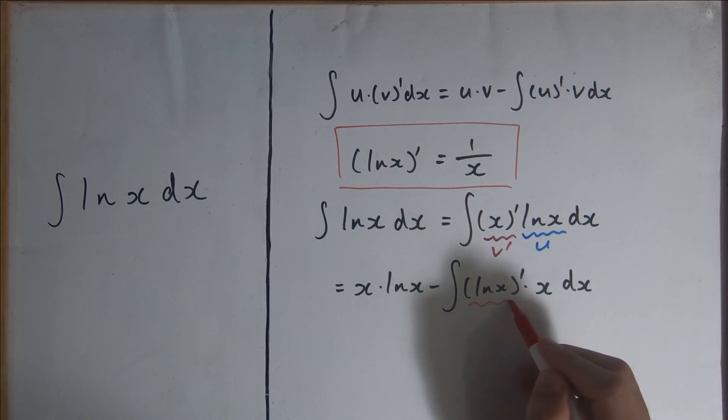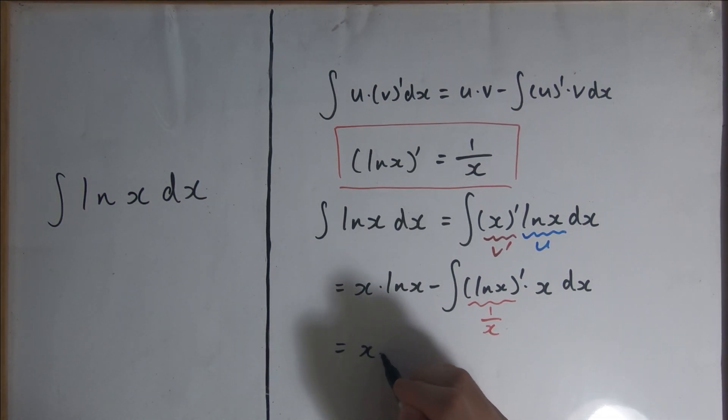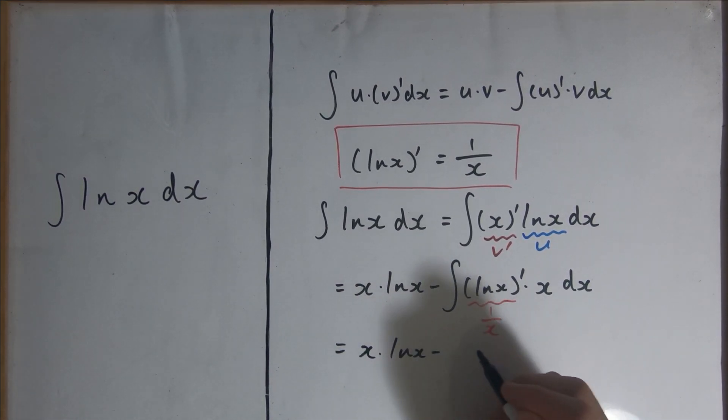We know that the natural log of x prime is equal to 1 over x, so this integral equals x times the natural log of x minus the integral of 1 over x.